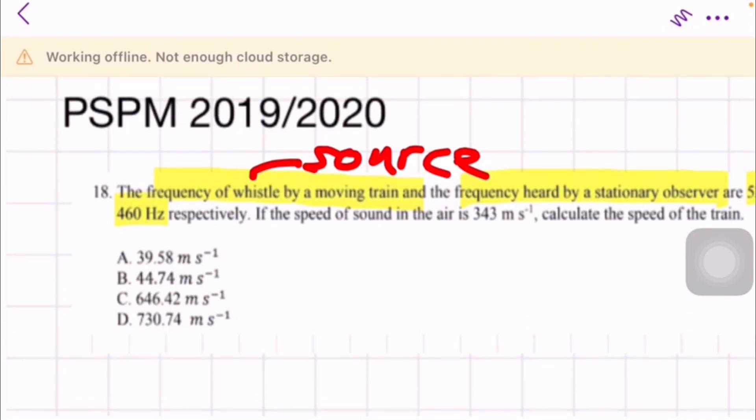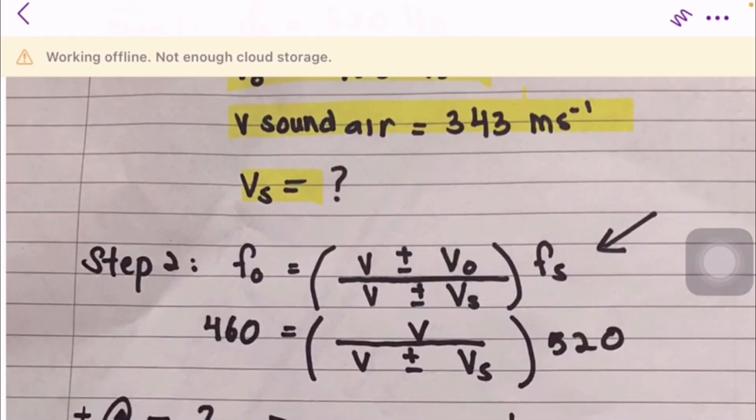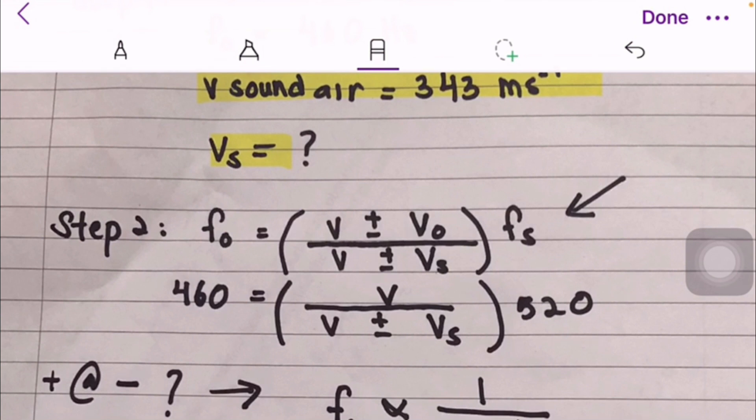Step two, we will use formula number 58 in the list of constants and formulas, which is fo equals v plus minus vo over v plus minus vs times fs.